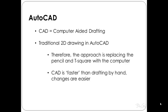So first, what is AutoCAD? If you've used it before this is very obvious, but if you haven't, what is the difference between the two pieces of software? CAD is computer-aided drafting. If we think about a traditional 2D drawing in AutoCAD, we're really replacing the T-squares and pencils with the computer. CAD is faster than drafting by hand and changes are easier — that's really where computer-aided drafting is coming from.